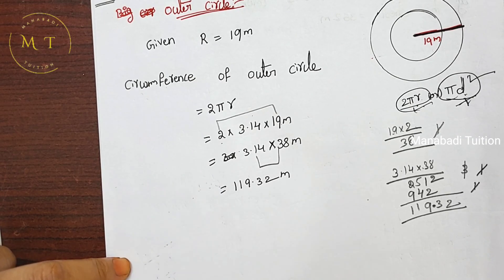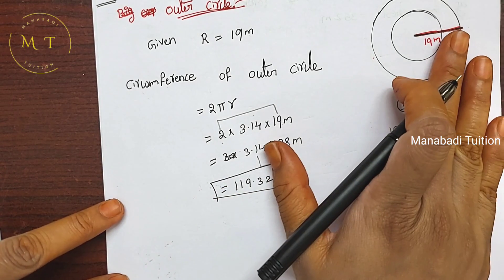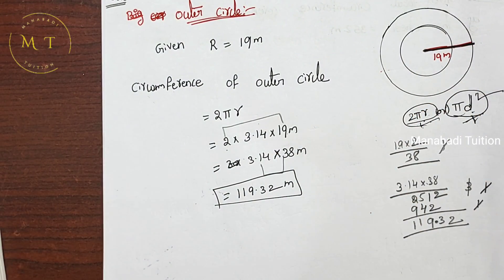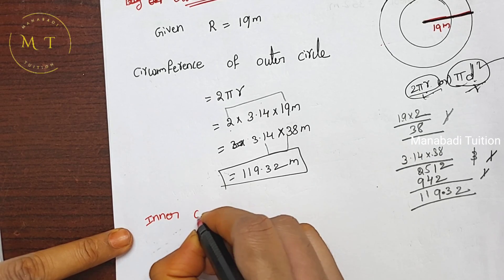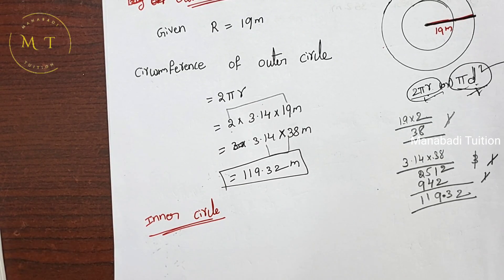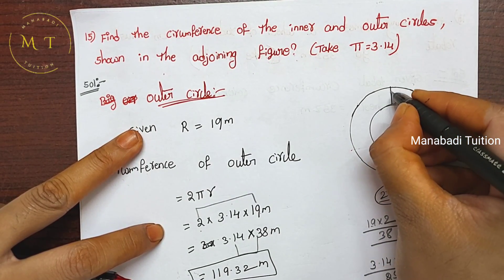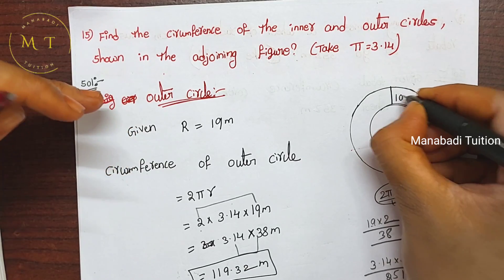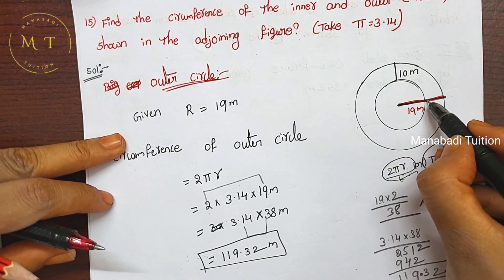So the answer has 2 decimal digits — place the decimal point to get 119.32. So the circumference of the outer circle is 119.32 meters. Next we find the inner circle circumference.